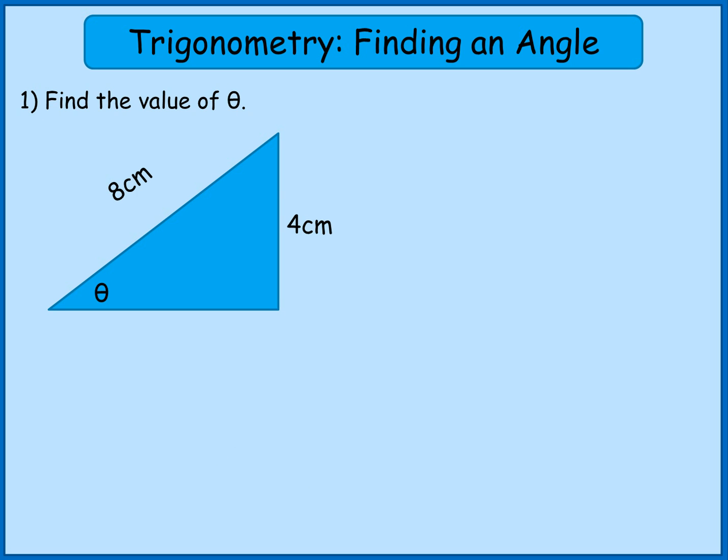Well let's have a look at our first example. So I've got a right angle triangle there. I've got two sides, I've got 8 and 4, and I need to find the value of theta, a missing angle. So the very first thing I'm going to do is label my sides. So opposite the right angle the longest side is the hypotenuse. Opposite the angle I'm interested in it's the opposite, and the one I've got left over is the adjacent. Always label your sides before you start a problem.